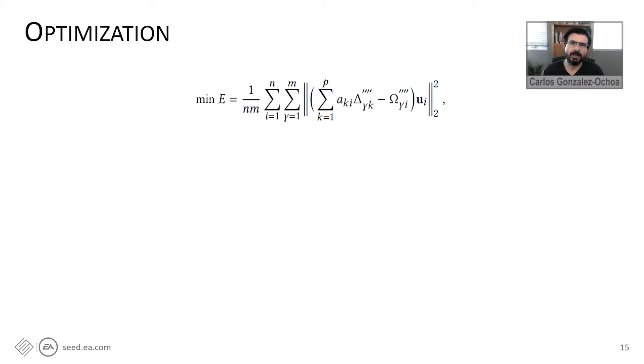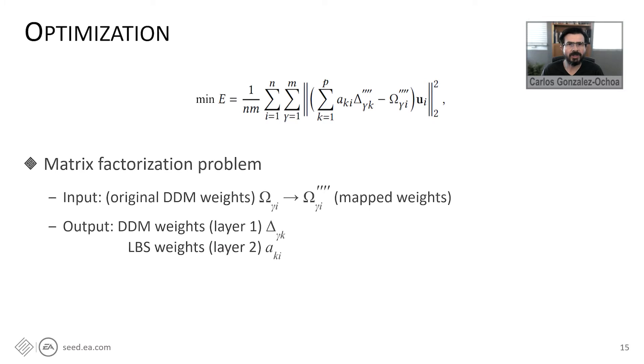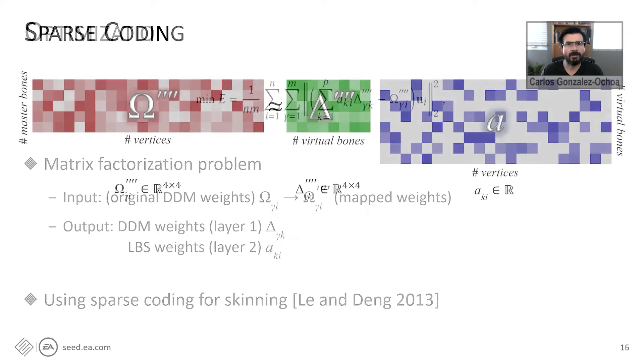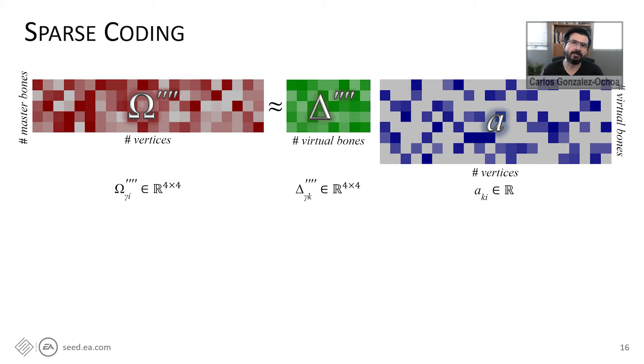My name is Carlos Gonzalez Ochoa, and I'm going to talk about the method we use to solve this problem. We define an objective function based on the original DDM weights, represented by matrix omega, and solve for two matrices. Matrix delta, which corresponds to the multi-weights for the virtual joints in the first layer, and matrix A, the linear blend skinning scalar weights of the second layer. This function resembles a matrix factorization problem, and we choose a sparse coding optimization strategy to solve it. For this decomposition, we approximate the matrix omega into the previously defined matrices. Notice that in difference to the work of Li and Deng, the matrices omega and delta are not composed of scalar values, but are composed of elements of a 4x4 matrix. And just like in the original DDM multi-weights, because of the symmetries, there's only 10 unique elements in these 4x4 matrices.